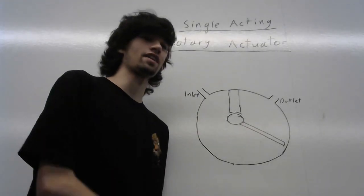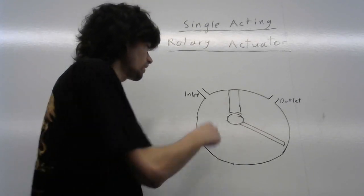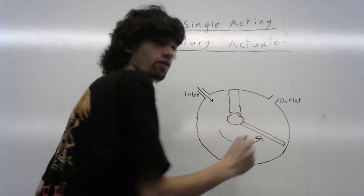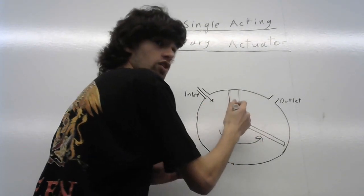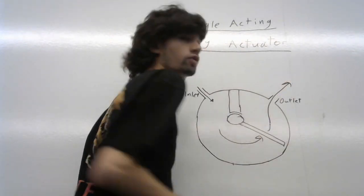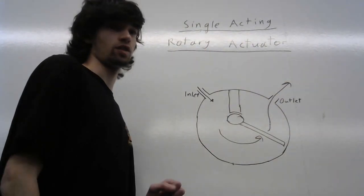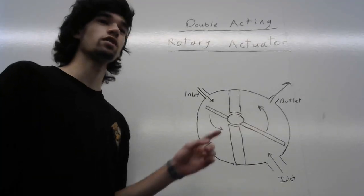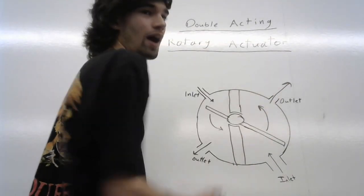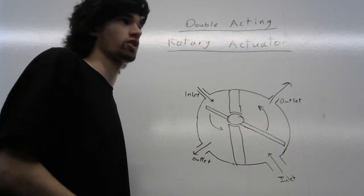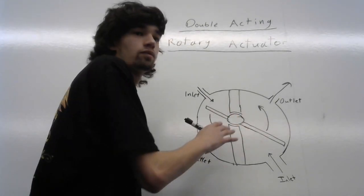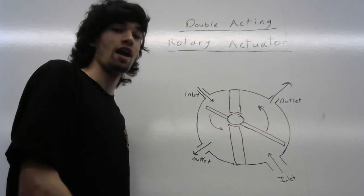This is a single acting rotary actuator. The inlet over here is where the fluid comes in from. It pushes on this flap over here that rotates, turning this shaft going in and out of the board. The fluid then goes through the outlet over there. Now we can make this more efficient — this is a double acting rotary actuator. It has two inlets for fluid and two outlets for fluid, and it is more efficient at creating rotational motion than a single acting actuator. These are useful for turning steering gears and other rotational mechanisms.